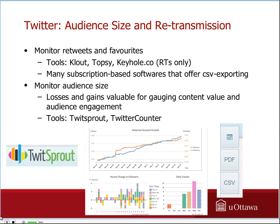Klout and Topsy offer the ability to look at individual pieces of mostly recent content, but they have no data exportability, whereas Keyhole allows you to do a complete CSV download. Audience size, as a measure of number of followers and number of accounts followed, as well as the number of lists that include your account, is a useful way of gauging community growth. I really recommend Twitsprout — they're a Canadian startup — as well as Keyhole, which is in Toronto. Twitter Counter is great because it provides CSV data, but you can't do the export if you're not a paying member, and it has to be updated manually.